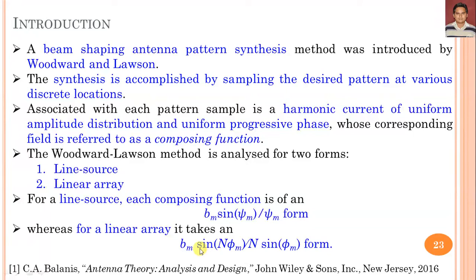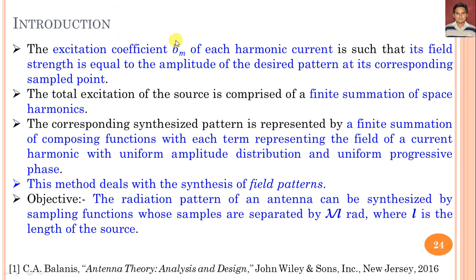We consider a uniform linear array with equal spacing and equal phase shift, with N number of elements. The excitation coefficient Bm is a function, and ψ is the progressive phase shift equal to βd·cosθ + kd·cosθ + β, as discussed in the antenna array series. Using the Woodward-Lawson method, we can design a pattern for beam shaping with a sampling technique at discrete locations. The excitation coefficient Bm of each harmonic current is such that its field strength equals the amplitude of the desired pattern at its corresponding sampled point.